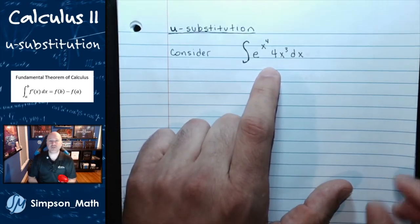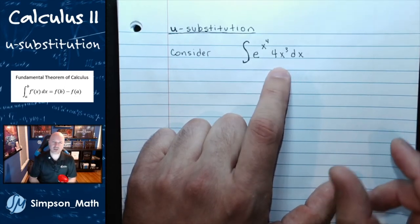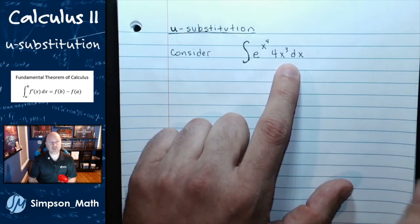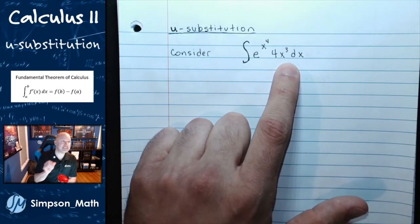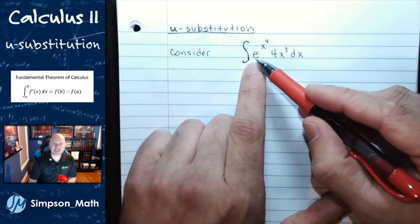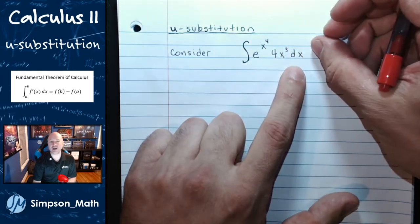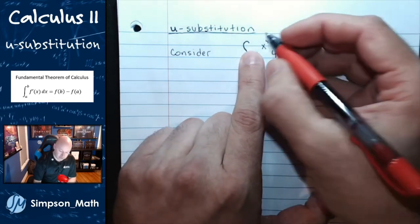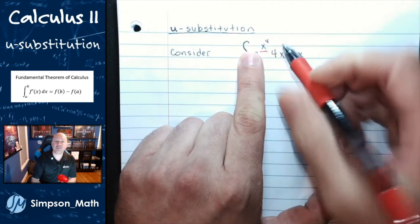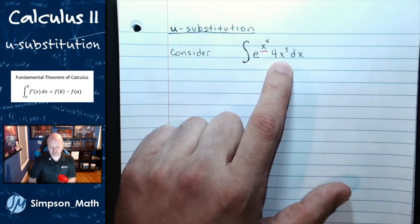With u-substitution, this strategy, this technique, you're trying to find a portion of this product that when you differentiate, that differential is another piece of the integral. So if I were to differentiate an e function — e to the whatever — it would spit out another e. I don't see another e. But if I differentiate x to the fourth, its derivative, 4x cubed, is sitting right here.